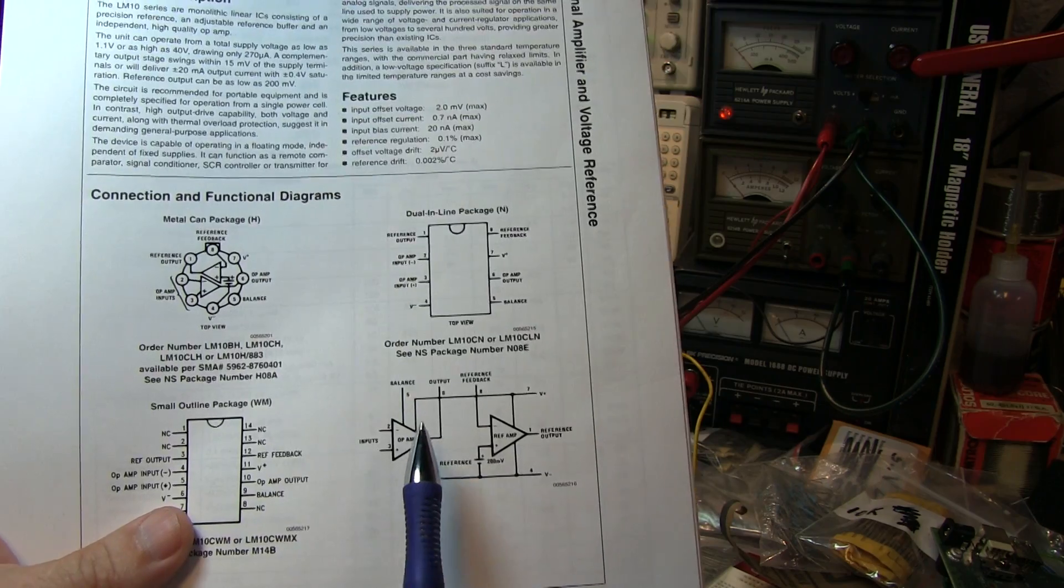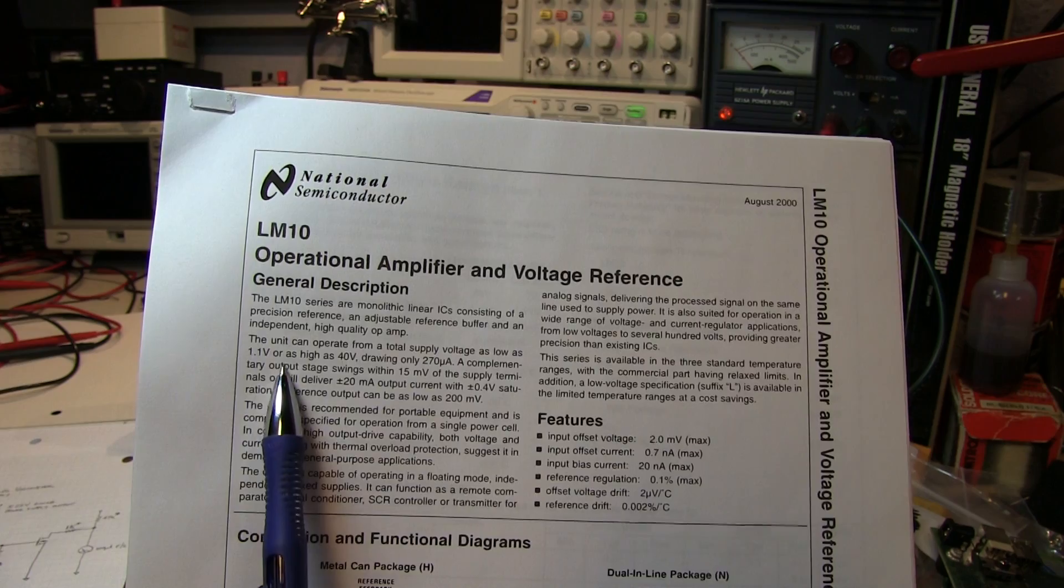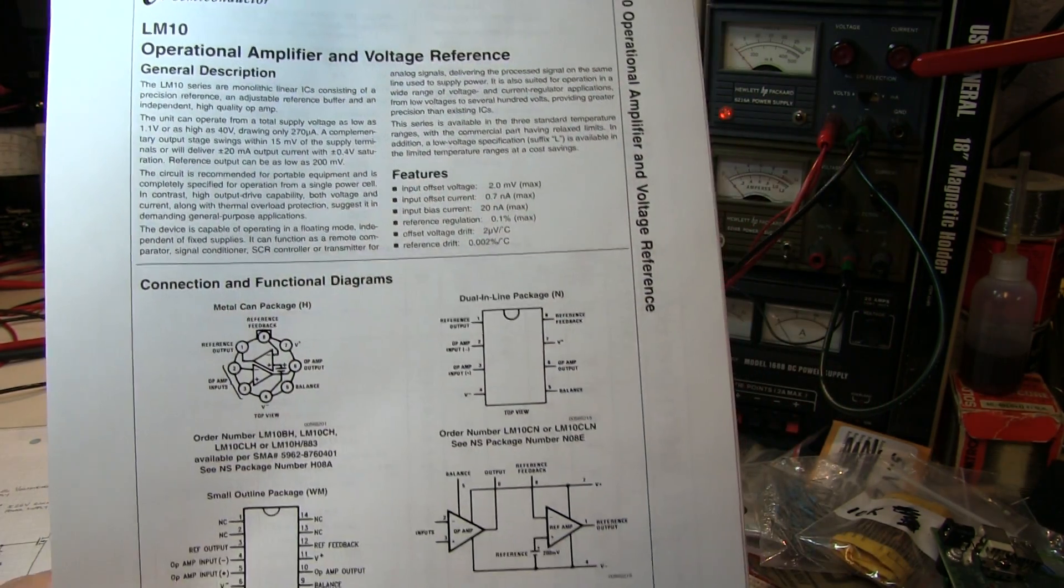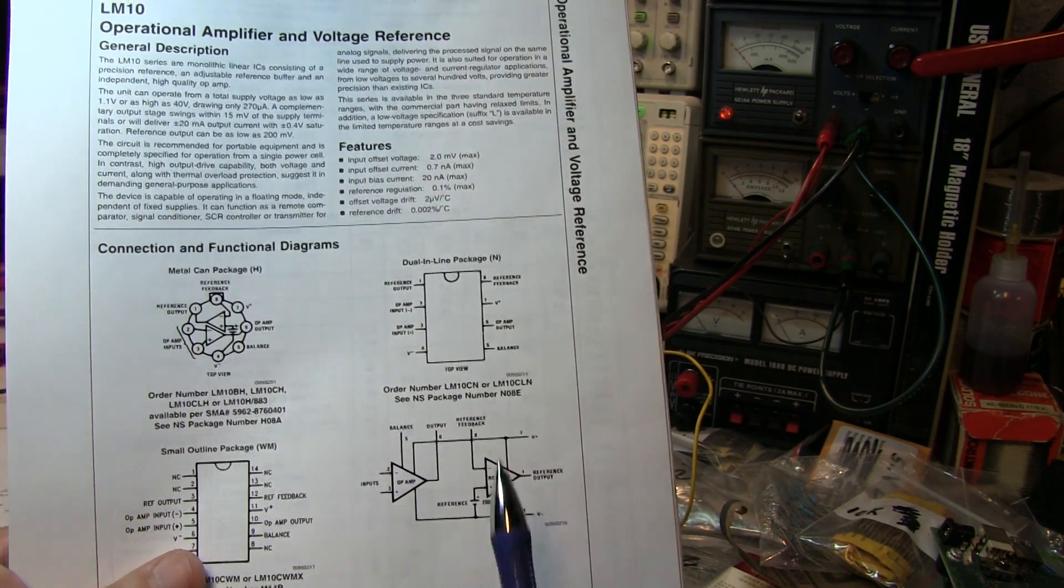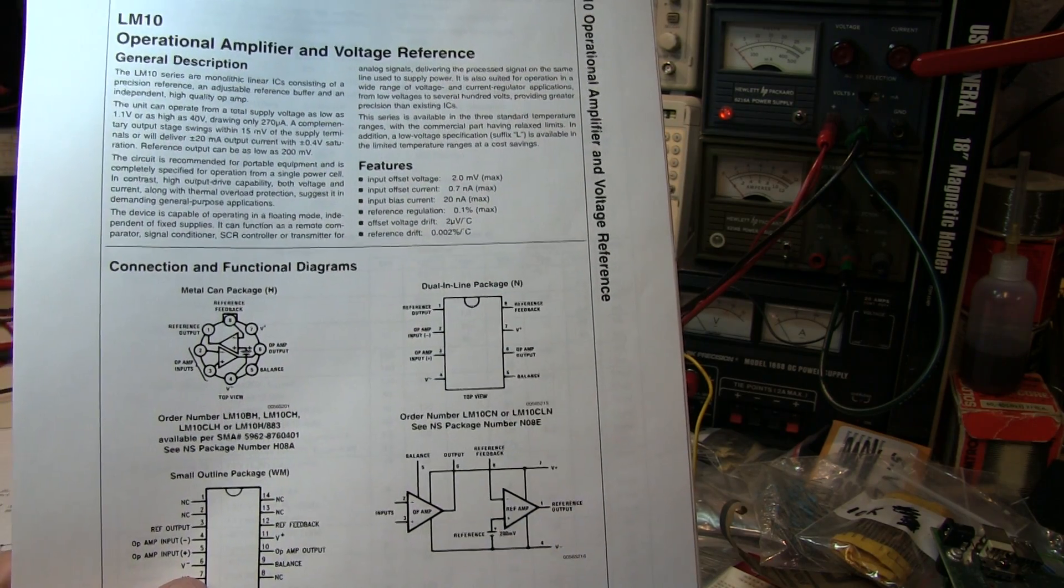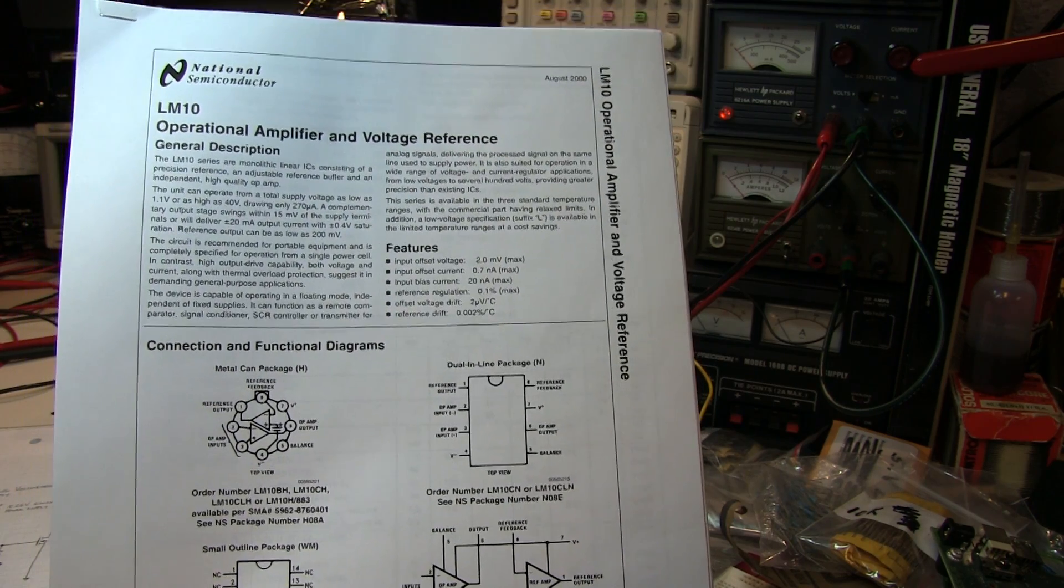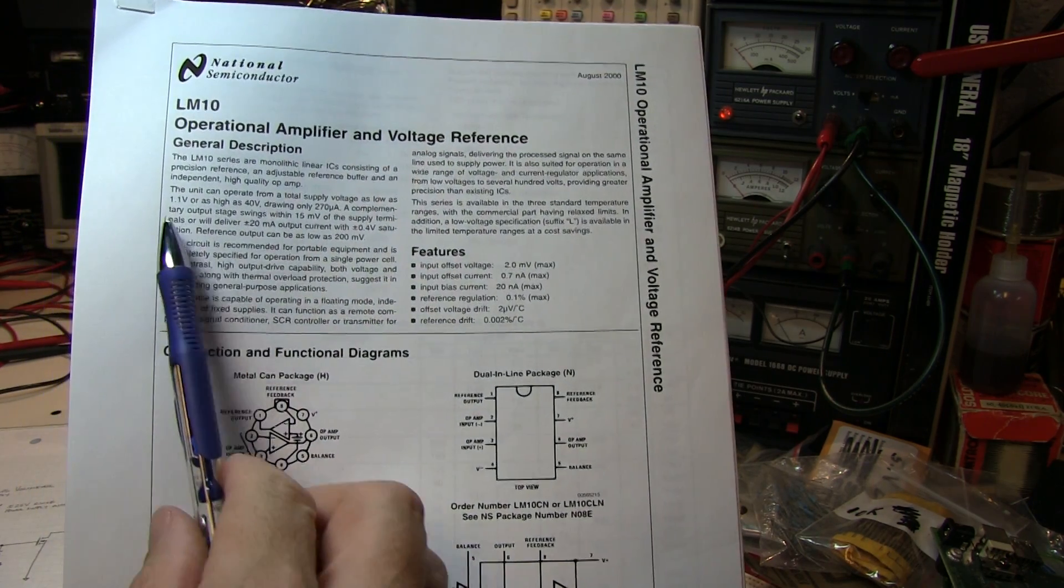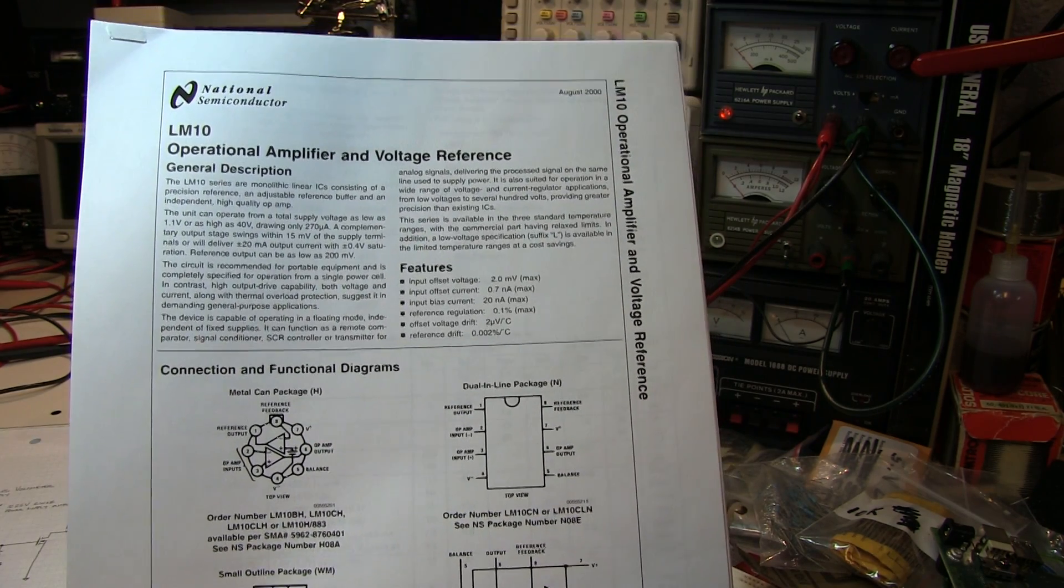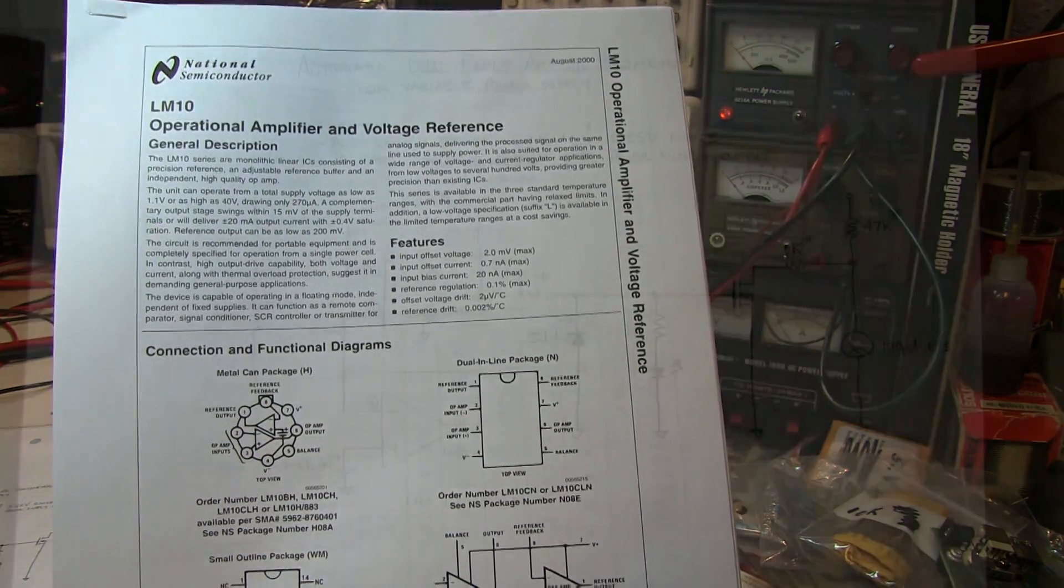Some of the real nice things about this is this circuit can operate with supply voltages as low as 1.1 volts, or even as high as 40 volts, and it can be operated floating. It's just a really flexible, neat little device, a little 8-pin package. And so, use this here to come up with this circuit. And what really makes it nice is because it can operate over such a wide power supply range, this whole circuit with the meter and everything is simply powered up off of the variable output of the DC power supply.